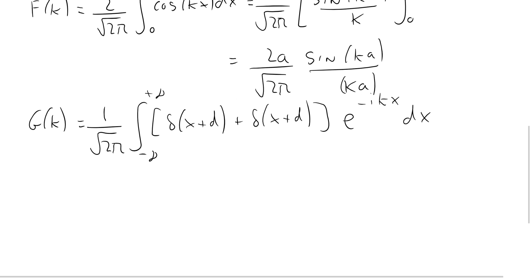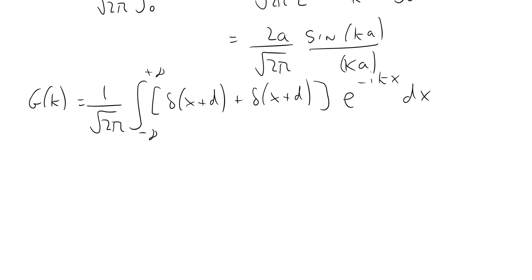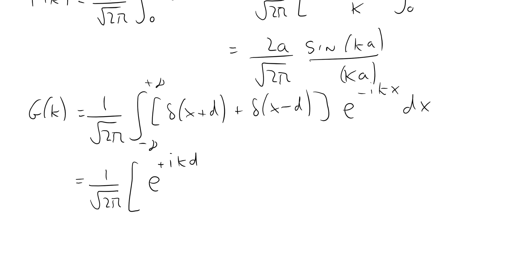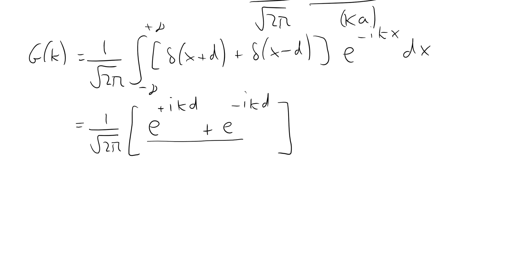To evaluate this integral we use the property that an integral involving a delta function gives the second function evaluated where the delta function is nonzero. The first delta function is nonzero at x = minus d, giving e to the plus ikd; the second is nonzero at x = d, giving e to the minus ikd. Summing these and factoring out a 2, we recognize the result as 2 over the square root of 2π times cos(kd).